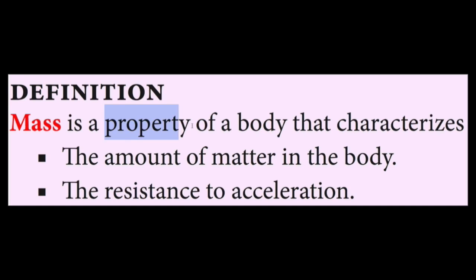Property means measurable characteristic of a body. A body in simple terms is a physical object like a football or a baseball. So mass is a measurable characteristic of a physical object that characterizes how much matter is in the body or how hard it is to accelerate the body for a given sum of forces.